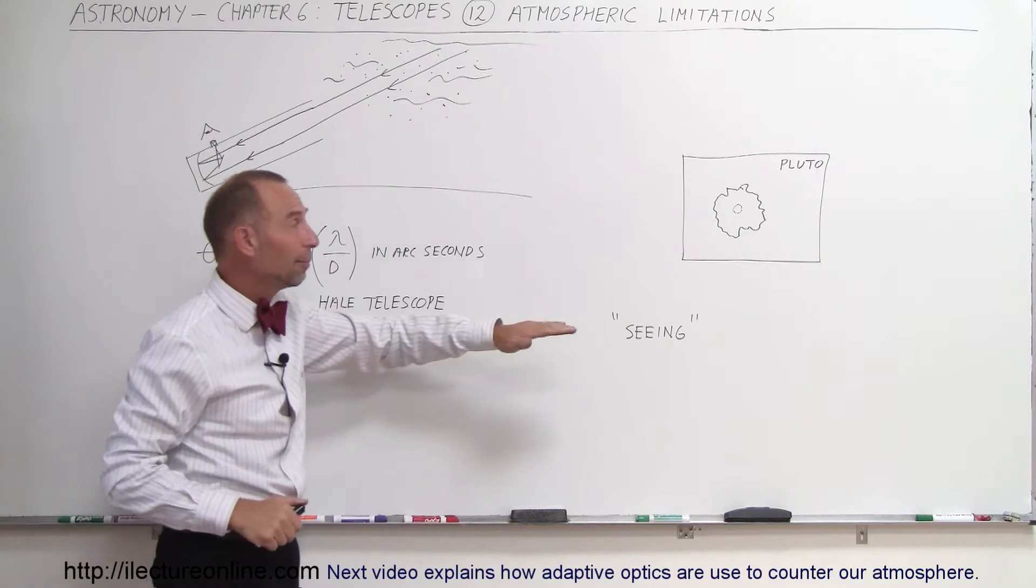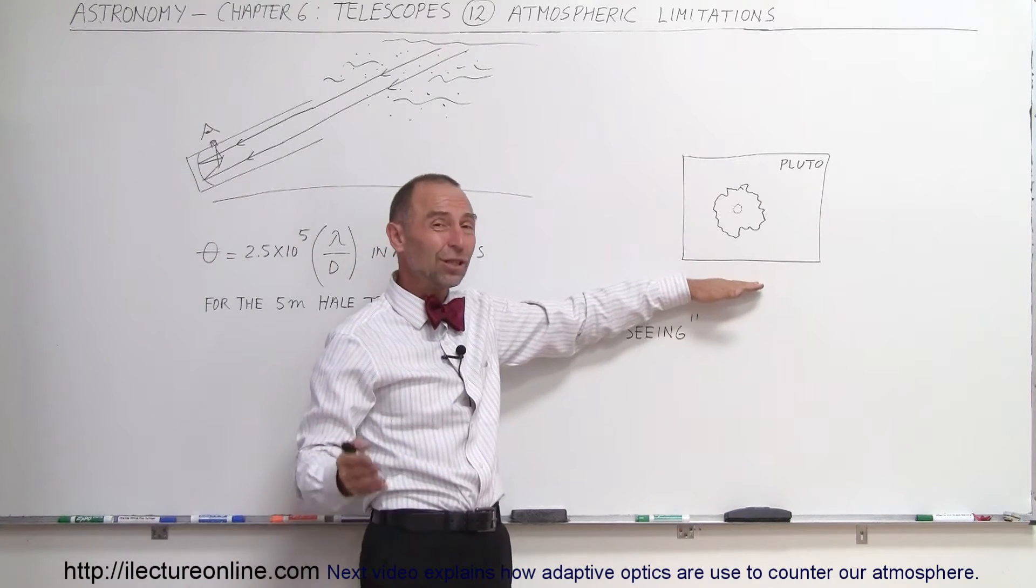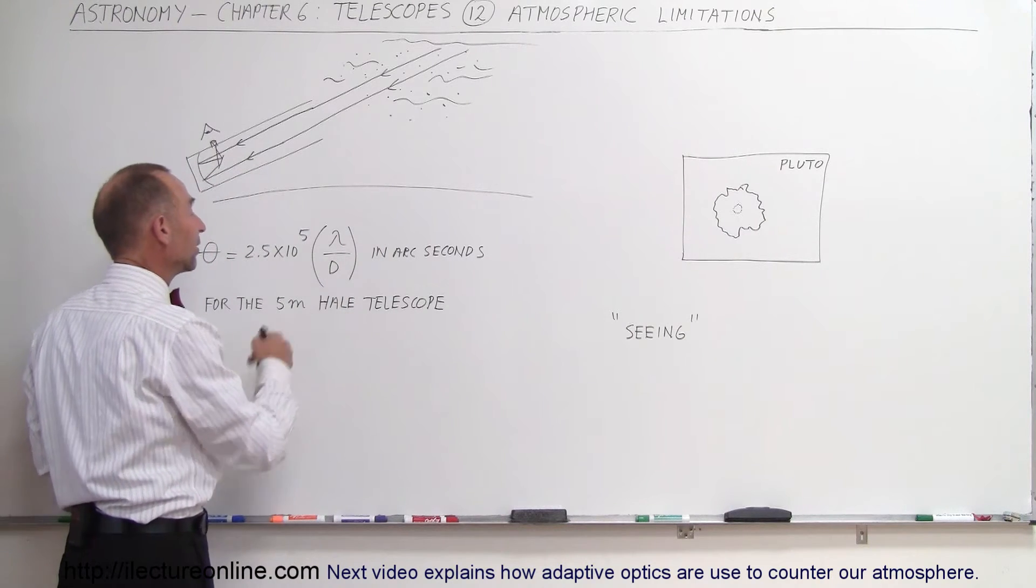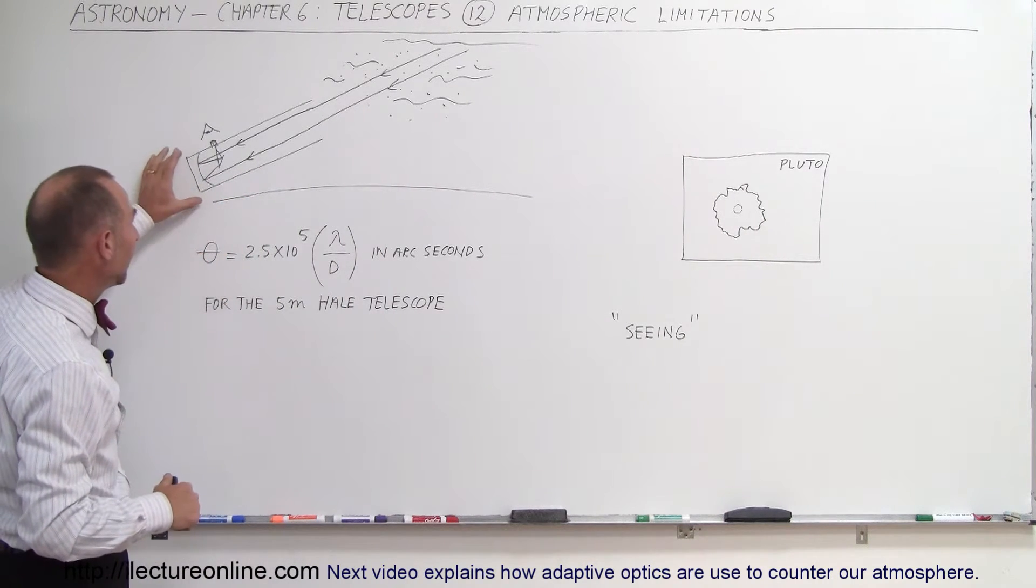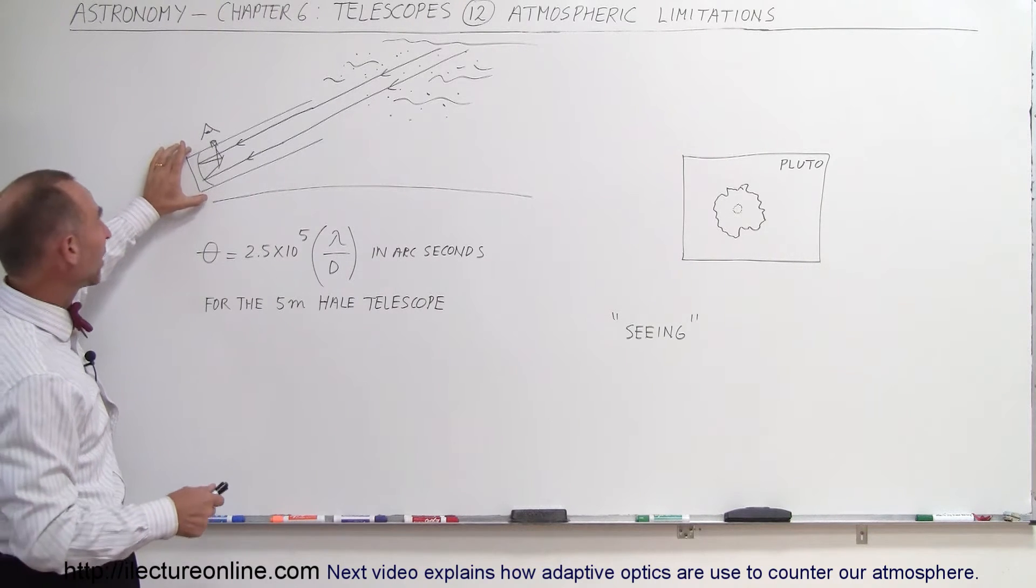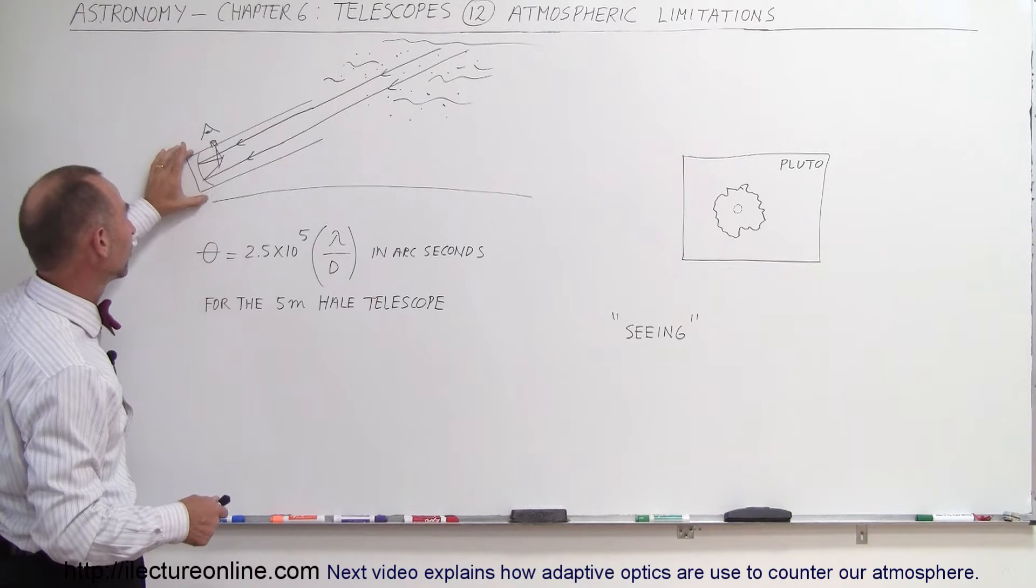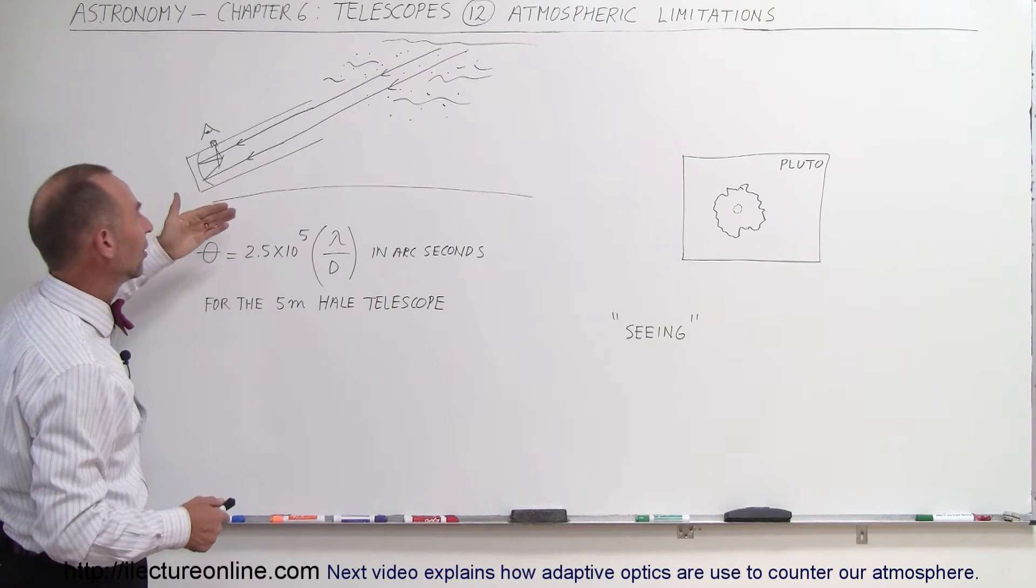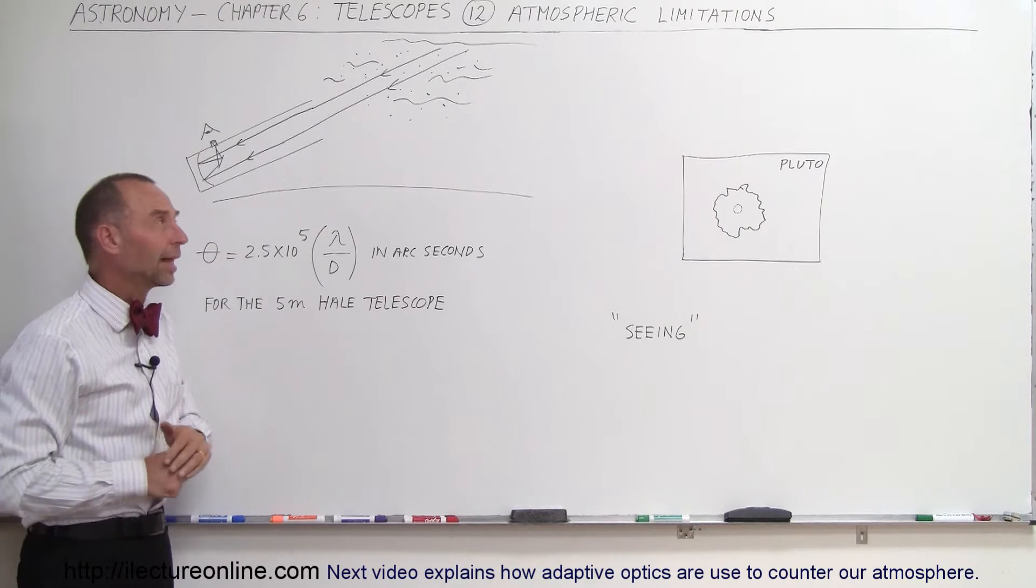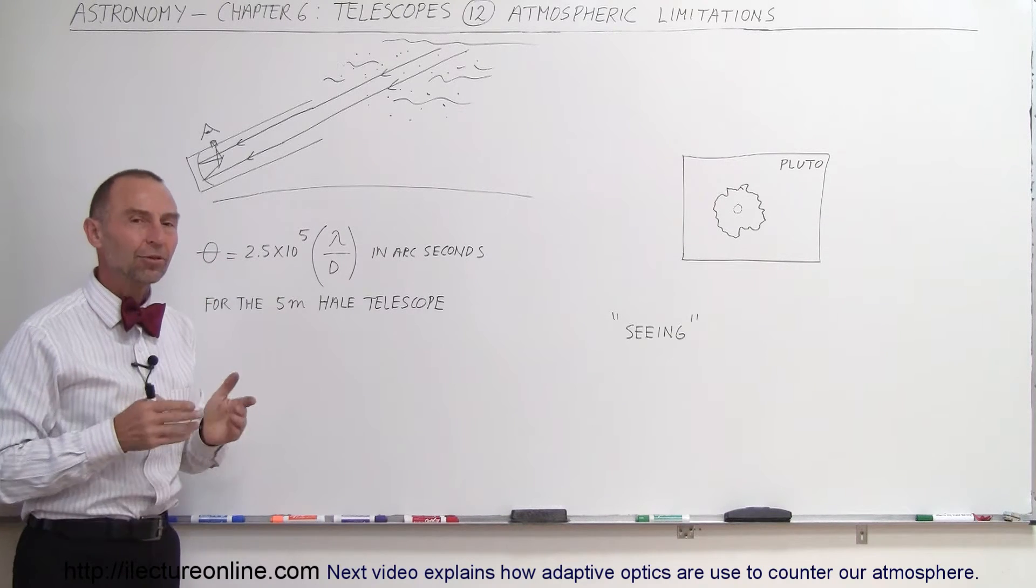For example, a picture that we take of Pluto, and of course you need a very big telescope to be able to see that. For example, the 5-meter Hale Telescope on Mount Palomar in California. It has a tremendous mirror there that's 16 feet across, weighs a number of tons of glass. And yet, the resolution angle theoretically would be fantastic for a telescope like that, but the atmosphere limits it.